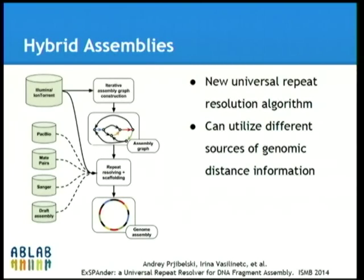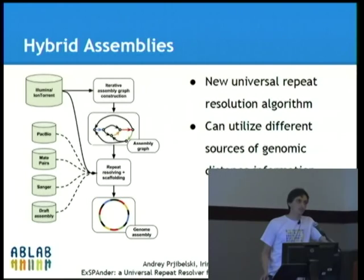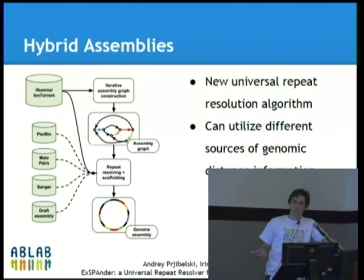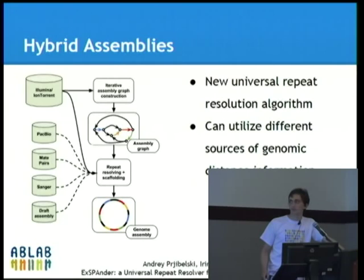How do we perform hybrid assembly? To perform hybrid assembly, you first need some short, high-quality reads, like Illumina or Ion Torrent. We construct the de Bruijn graph and simplify it to construct an assembly graph. Then we align all other reads — like PacBio, mate pairs — to this graph and feed these alignments into a universal repeat-resolving algorithm, which does not care about the source of data. It just uses the alignments to resolve repeats and perform scaffolding.